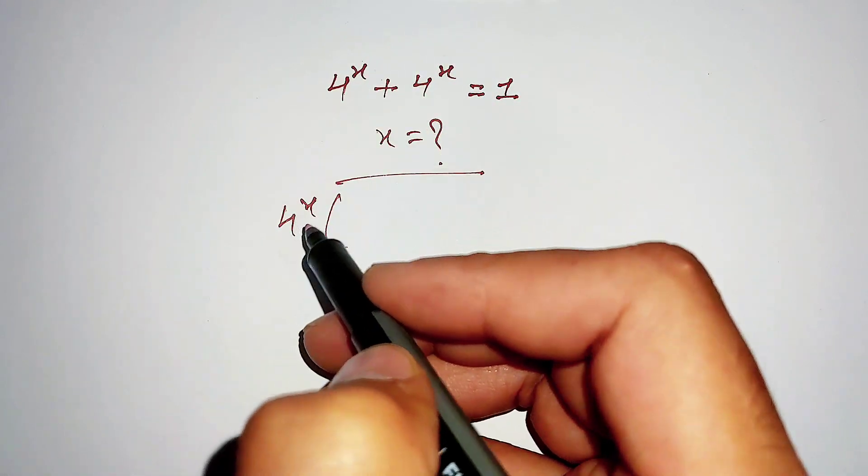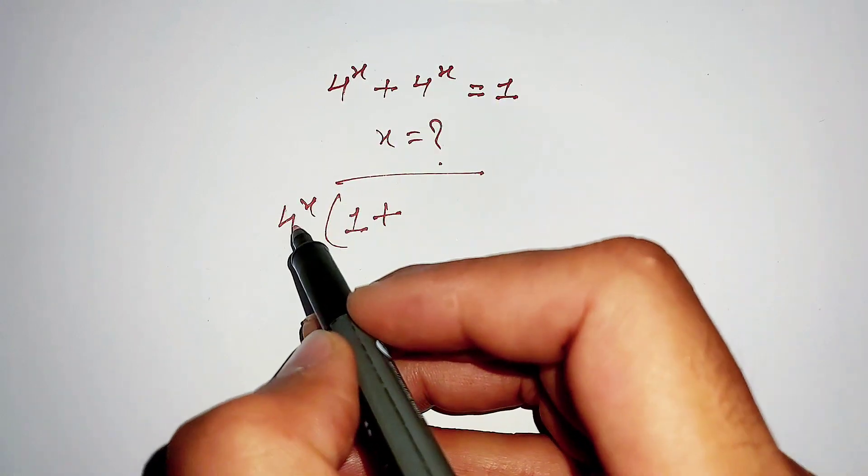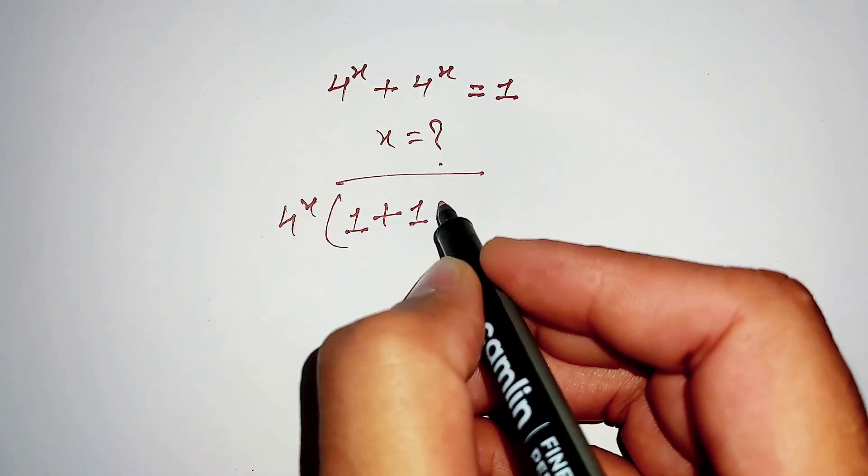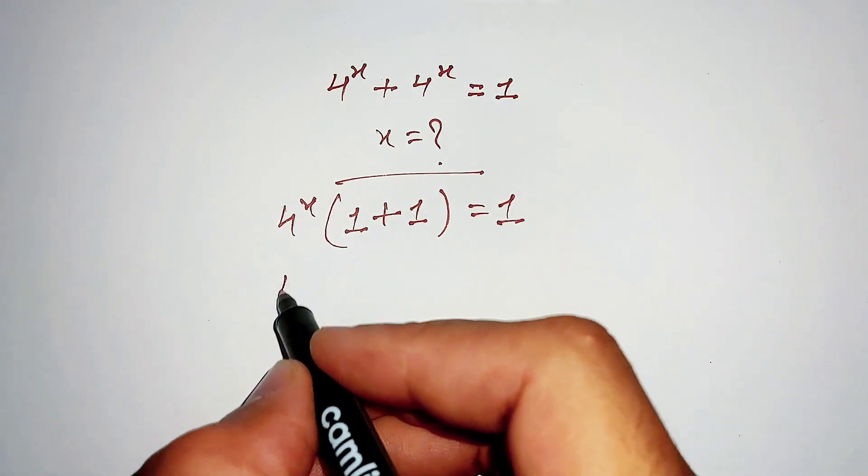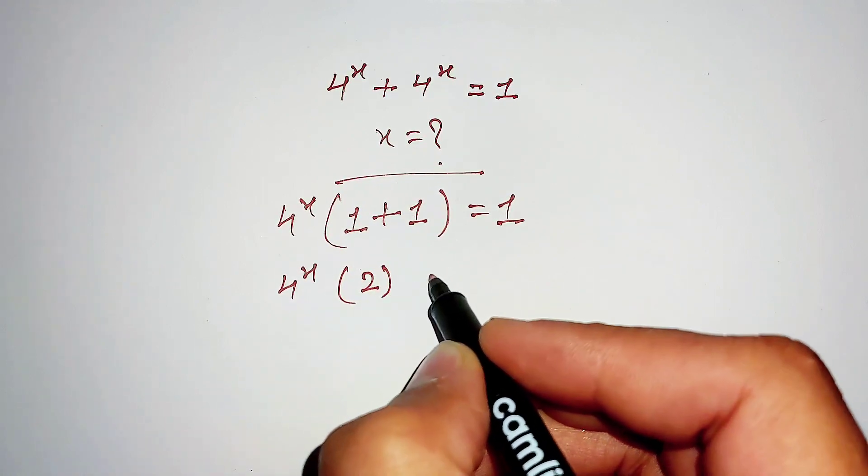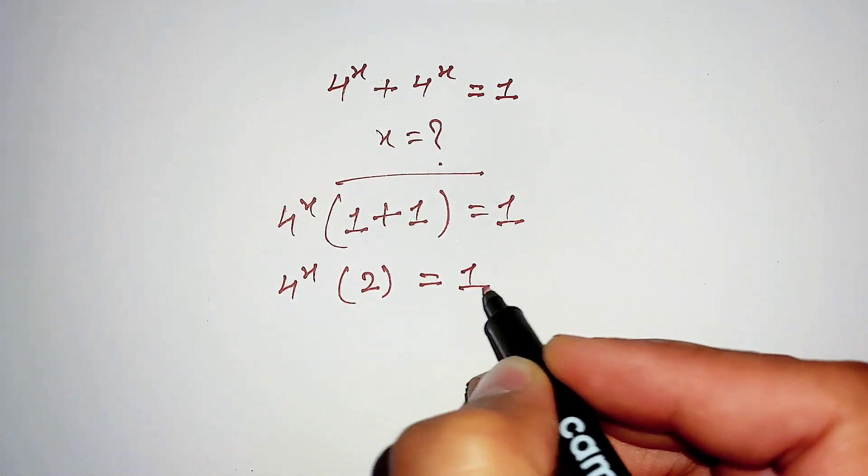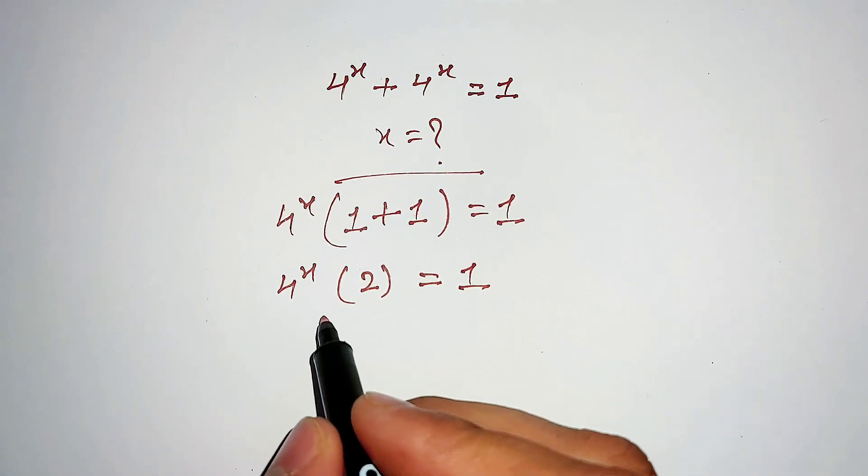4^x divided by 4^x equals 1, plus 4^x divided by 4^x equals 1. So 4^x times (1 + 1) equals 2. Now divide by 2 on both sides.